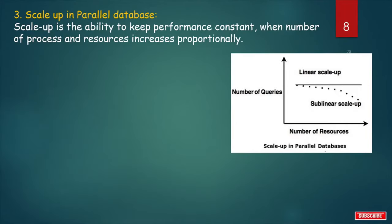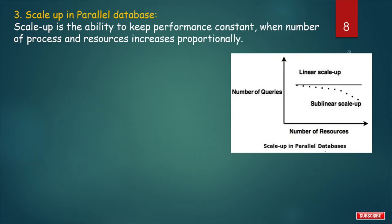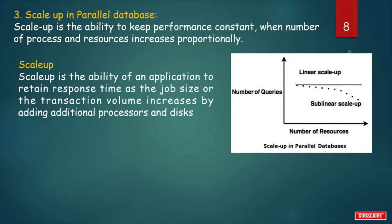Third parameter: Scaleup in parallel databases. Scaleup is the ability to keep performance (response time) constant when the number of processes or transactions and resources like CPU and memory increase proportionally. If the job size or transaction volume increases, we can retain the response time by adding additional processors and disks. Scaleup is the ability of an application to retain response time as job size increases by adding additional processors and disks.